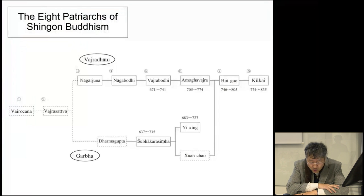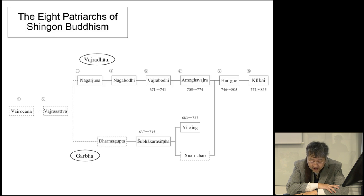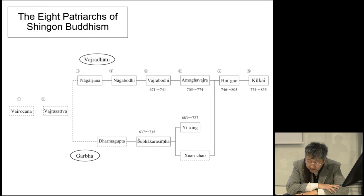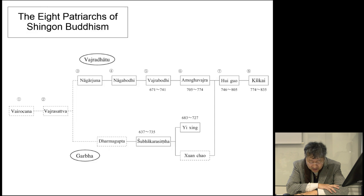The Two World Mandalas consist of the Taizoukai Mandala, or the Garbha Mandala, described in the Daishikyo or the Vairocana Abhisambodhi Sutra, and the Kongokai Mandala, described in the Kongo Chokyo or the Sarvatathagata Tattvasangraha. These two mandalas evolved separately in India and entered China by different routes, but in China they subsequently came to be regarded as forming a pair.